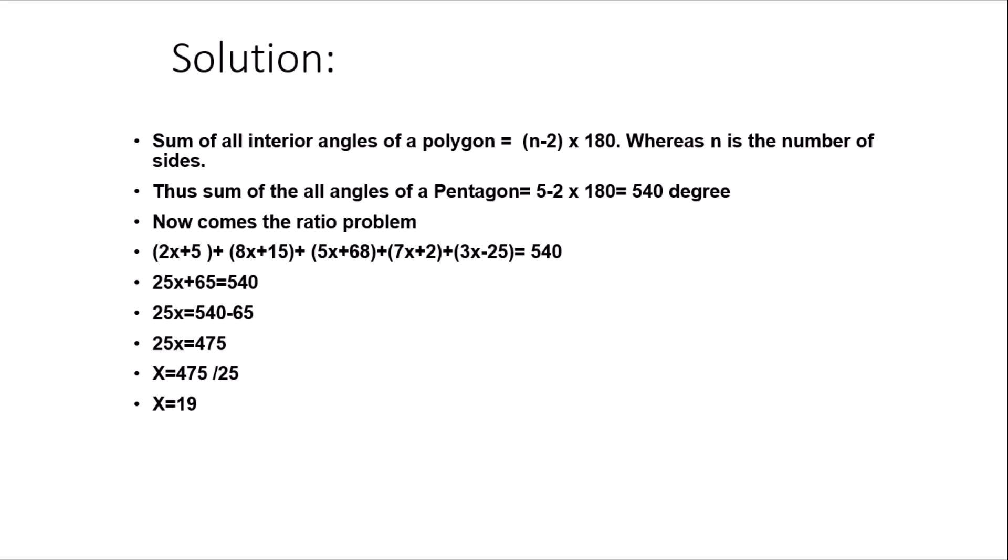Now the question is, do we need to put the value of x in all the angles and calculate which is the smallest angle? No, gentlemen, not at all. HAT test is not simply solving the question but looking for your time as well. You don't have to put the value of x in all the equations. Simply see by observation which angle seems to be smallest. Here the factor x is being multiplied by 2 in the first ratio and by 3 in the last ratio. I believe that any of the angle from the first or the last ratio is going to be the smallest angle.